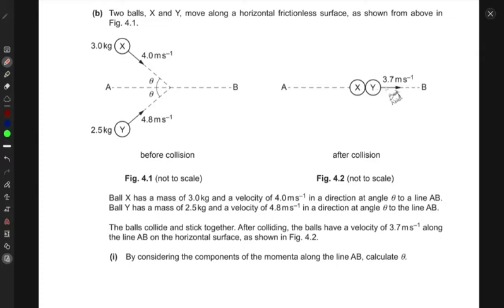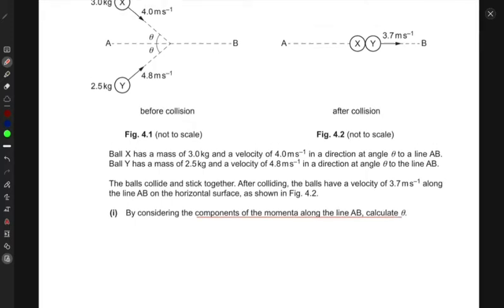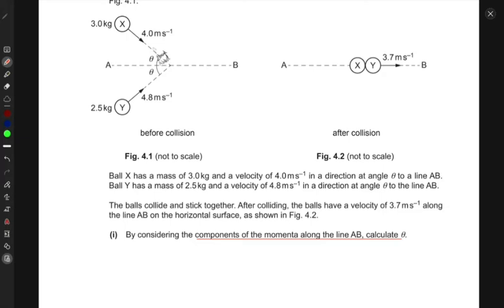After collision, they both stick together and start moving with a velocity of 3.7 to the right. The balls collide and stick together. After colliding, they have a velocity along this line. By considering the components of momenta along the line AB, what would be these components of momenta?